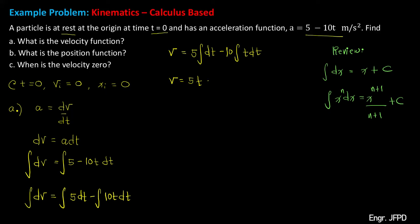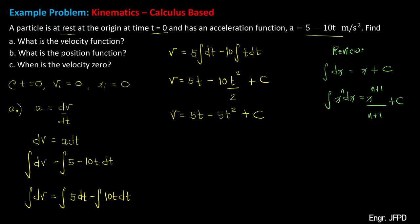This will now be v equals 5. For the integral of dt, this gives us t. Any constant combined with another constant is just a constant c. Then minus 10 — just copy the constant — and for the integral of t dt, applying the power formula, the exponent is understood to be 1, giving t raised to 1 plus 1, which is 2, over that exponent of 2, plus c. Simplifying: this is 5t, and 10 over 2 is 5, giving 5t squared plus c.